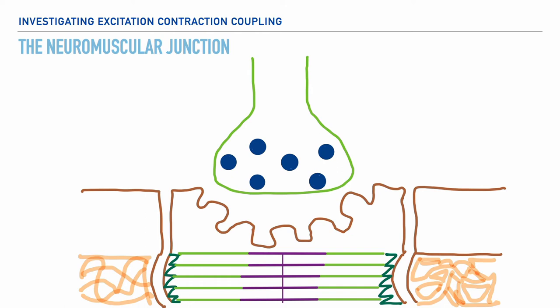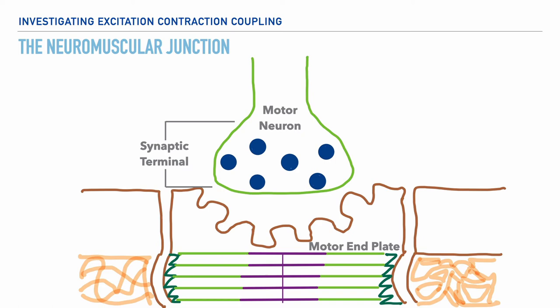As shown on your screen, that is exactly what we're reviewing. So let's label some of the components you see here. First, we have the motor neuron, which is the nerve that connects to and powers the muscle fiber. Next, we have the synaptic terminal, which represents the end component of the motor neuron. Next is the motor end plate, which is the area of the muscle fiber in which the motor neuron sits. The space between the synaptic terminal and the motor end plate is referred to as the synaptic cleft. And just below this, we'll notice the sarcomere.